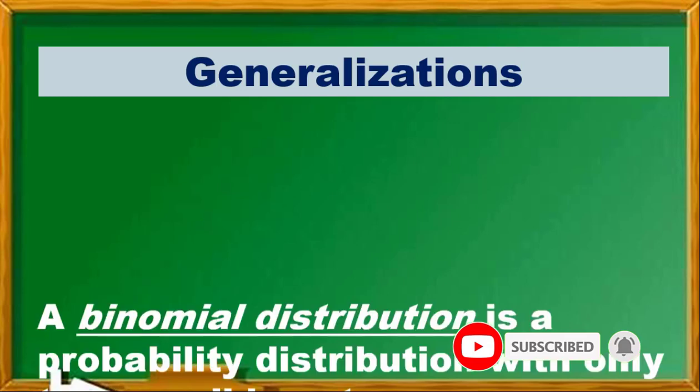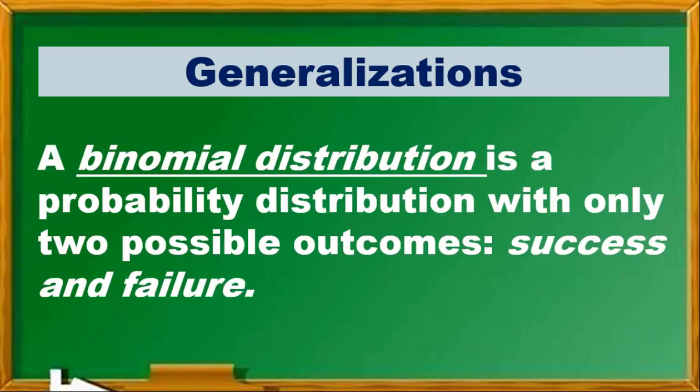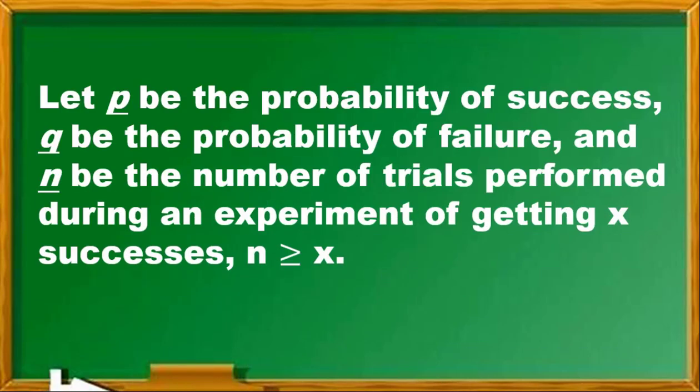Generalizations: A binomial distribution is a probability distribution with only two possible outcomes, a success or a failure. We let P be the probability of success, Q be the probability of failure, and N be the number of trials performed during an experiment of getting X successes.